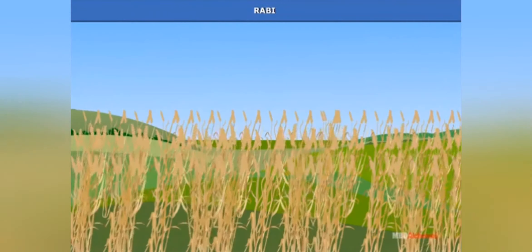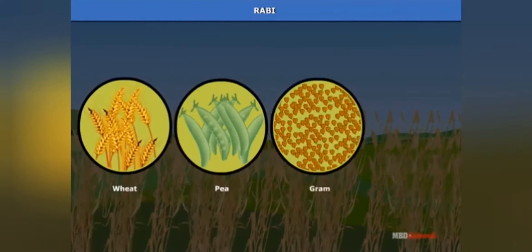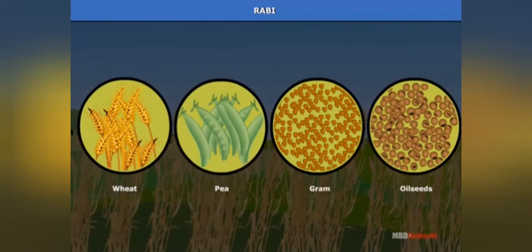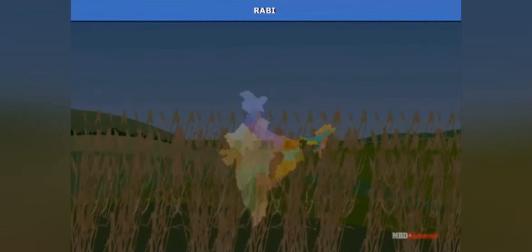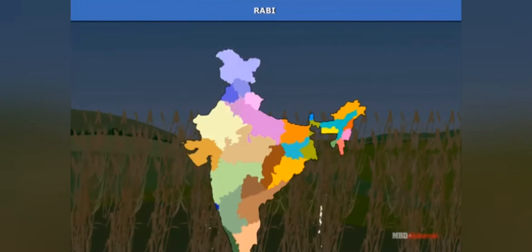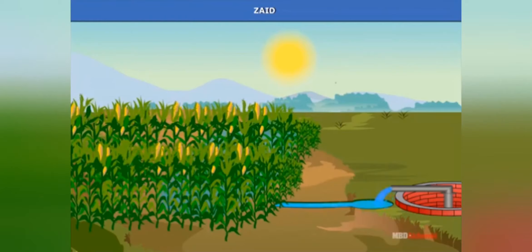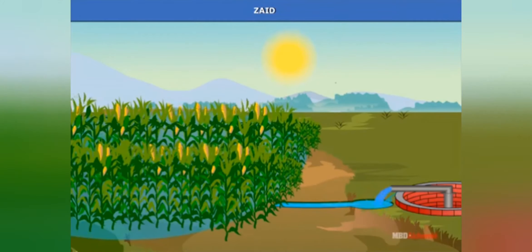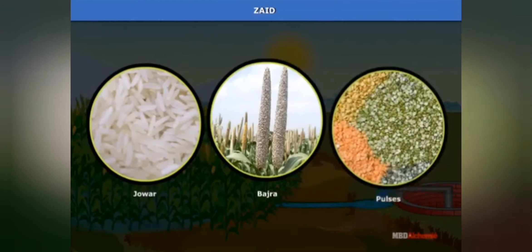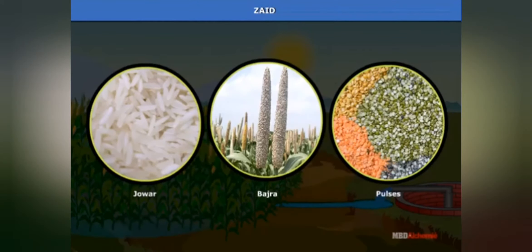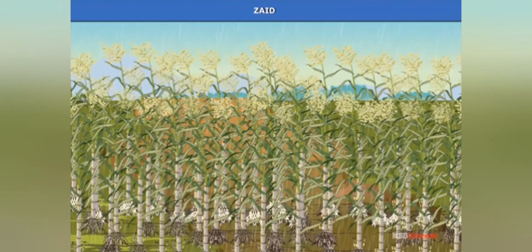Rabi crops are sown in the winter season from October to December and harvested from April to June. Wheat, peas, gram, and oilseeds are the most important crops in the Rabi cropping pattern, which spans more than six months. The third and shorter cropping pattern is Zaid, which takes only two to three months. Very short-term crops like jowar, bajra, and pulses are grown in the Zaid season.